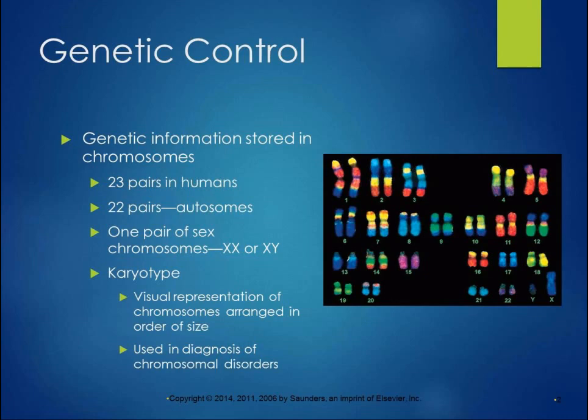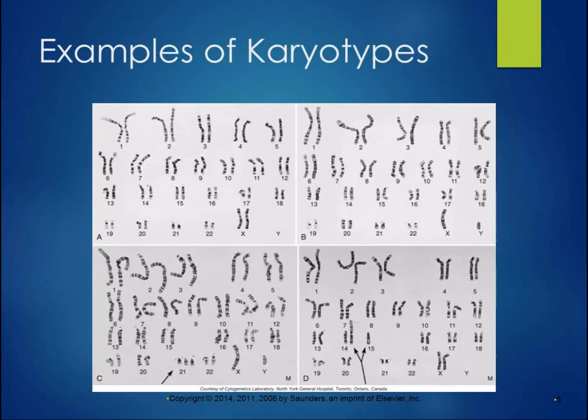Genetic information in our cells is stored in chromosomes. In humans, we have 23 pairs — 22 pairs of autosomes and one pair of sex chromosomes. If you're female, you have two X's, and if you're male, you have an X and a Y. The karyotype is a visual representation of chromosomes arranged in order of size, starting with the biggest ones as number one and the smallest as number 22, with X and Y on their own. It's used in the diagnosis of chromosomal disorders.